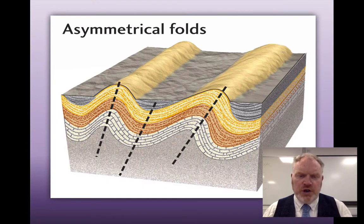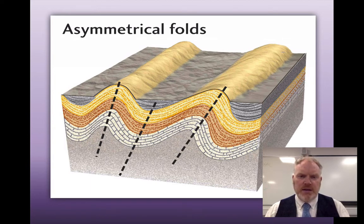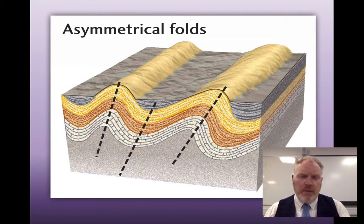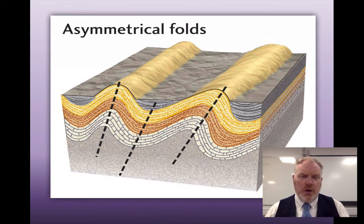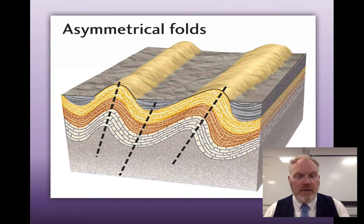We saw in that demonstration the difference between upright folds and inclined folds. When we look at the axis of these folds, they can be tilted. It's often linked to the idea of asymmetric folds, where one limb of a fold is longer than the other limb. Where that's the case, we have asymmetry.